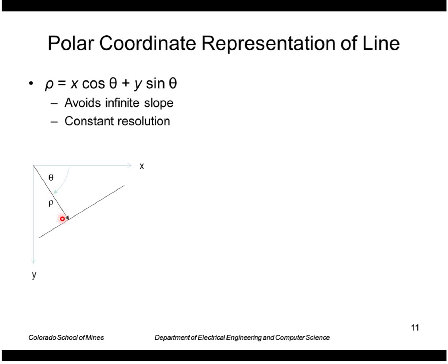Theta is the angle of that vector from the x-axis. So we don't have any problem with vertical lines—that would just be theta equals zero. And we also have constant resolution for our slopes.